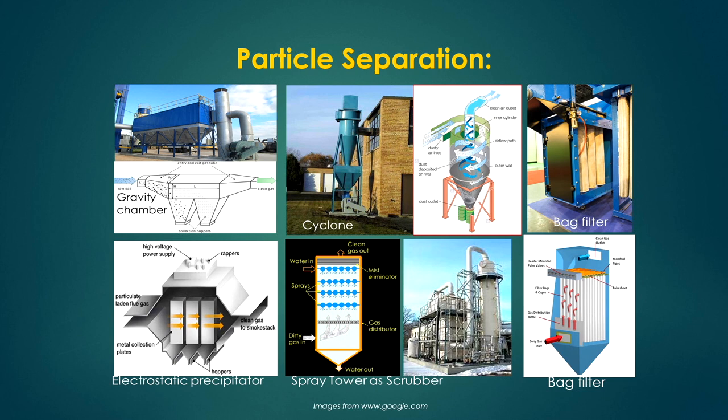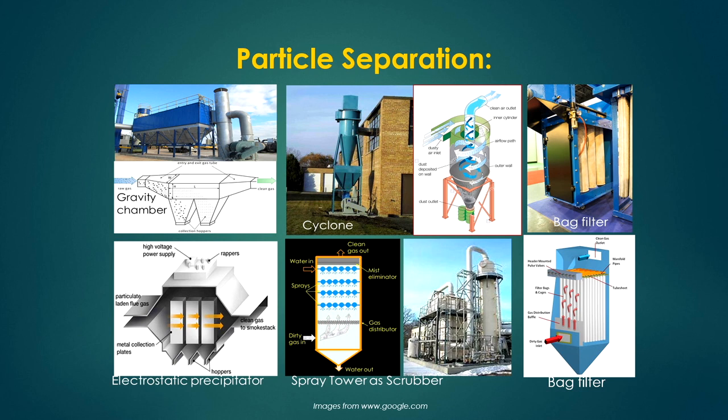Particle separation is another important operation. Different processes are available to separate particulate materials from mixtures — from gaseous mixtures, slurries, or other effluents. These include gravity chambers (gravity-based separation), cyclones (centrifugal force-based separation by size), and bag filters, which use a cloth-type membrane inside to separate particulate materials.